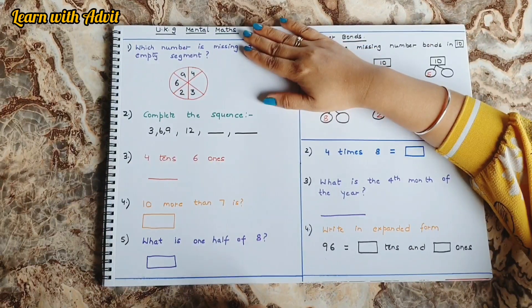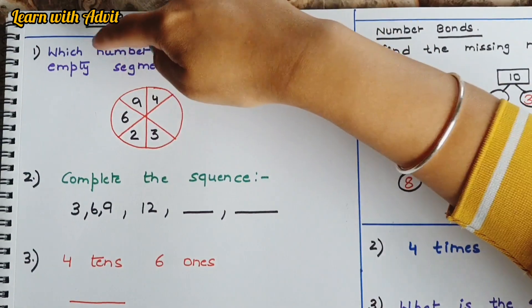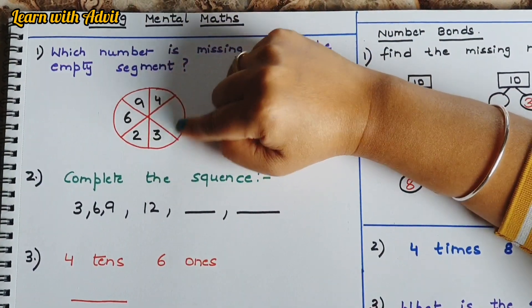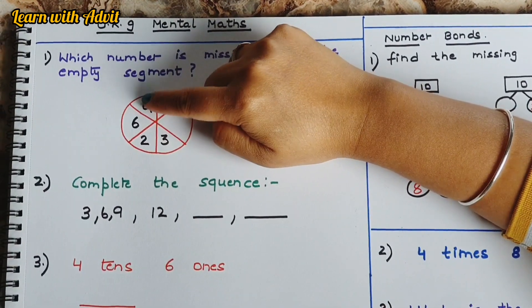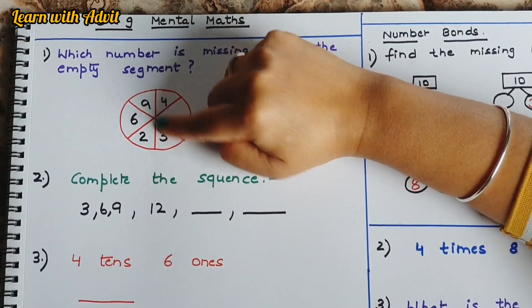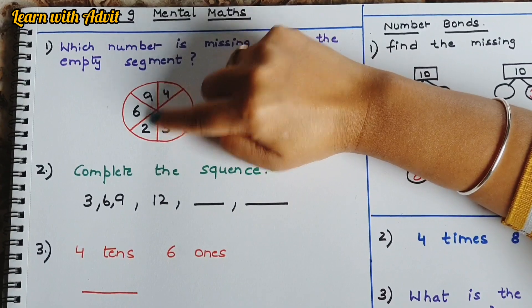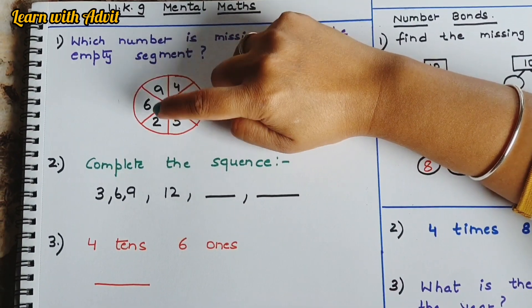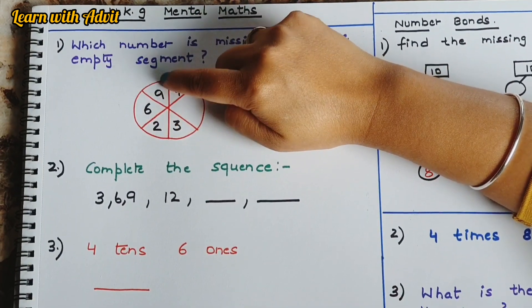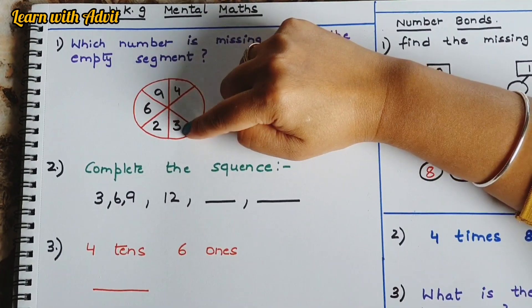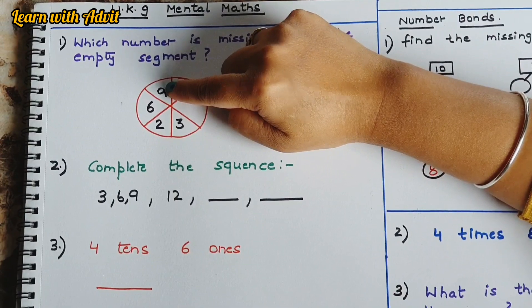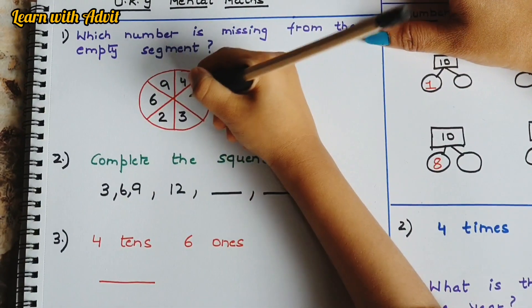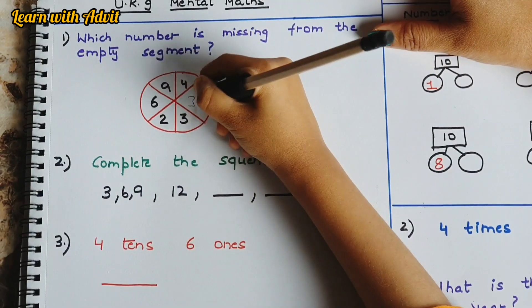So here, what you have to do? Which number is missing from the empty segment? You have to look carefully. Like this is one segment, this is one segment, and this is one segment diagonally. So guess: 3 and 9, 2 and 4. That means we have to multiply the number by itself. 3 into 3 is 9, 2 into 2 is 4. So what will come here? 6 into 6 is 36. Very good. That's why mental maths makes our calculation very easy.